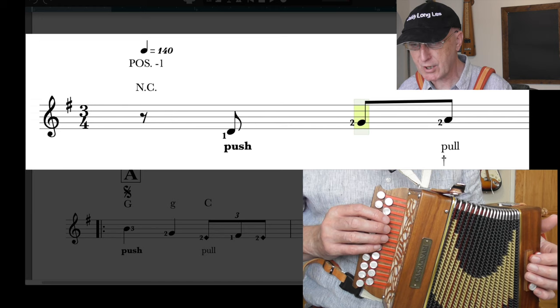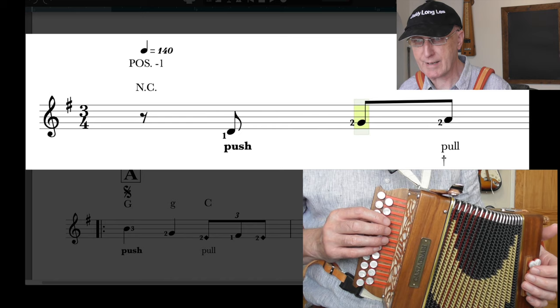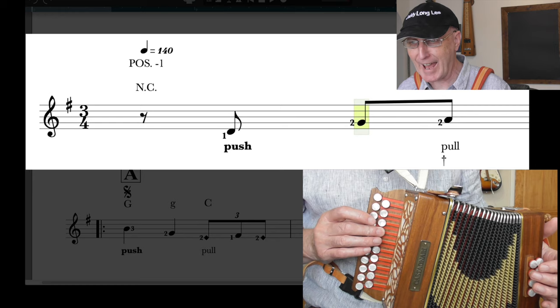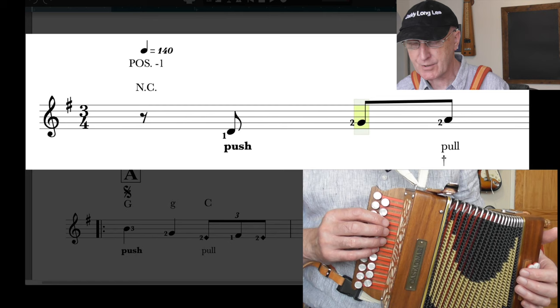Now let's look at this pickup bar, bar nought as it's known, position minus one. First finger is on this D, that little sign before the note is a quaver rest. So you're going to count one, two and three and, one, two and three and, you'll come in on the and three and.